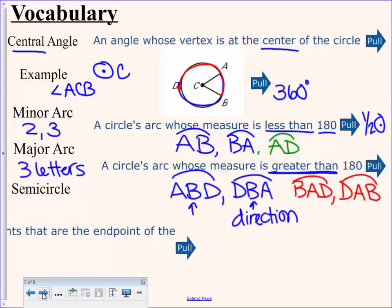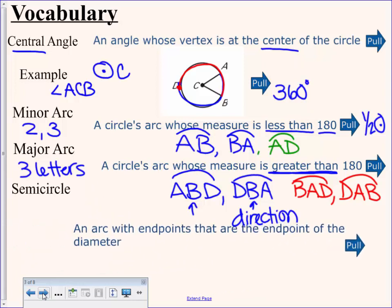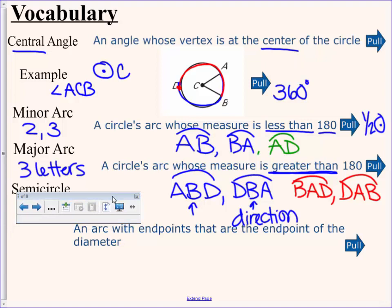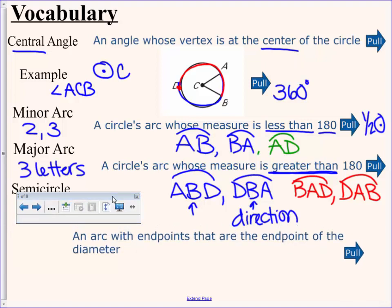The last one is a semicircle. The definition is important because it has specific terminology. It's not just saying a semicircle is exactly 180 - it's the endpoints of the diameter. You can draw a diameter through the middle, and the endpoints of that diameter create a semicircle. You can name a semicircle with two letters or three letters.